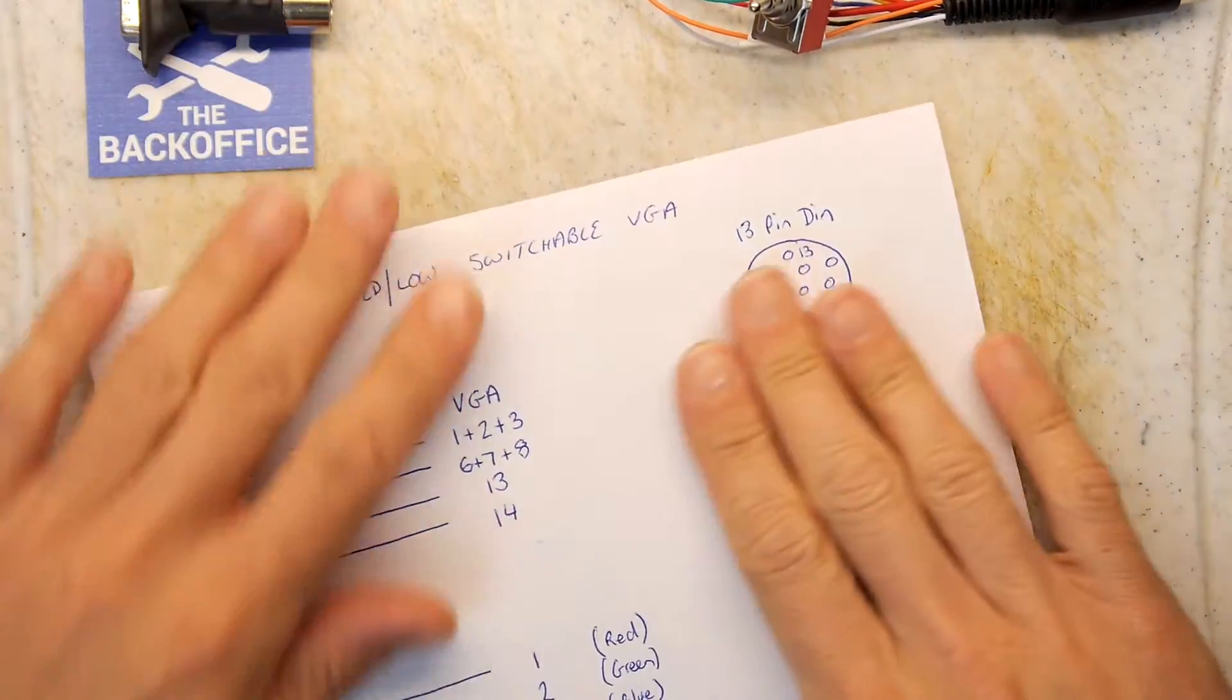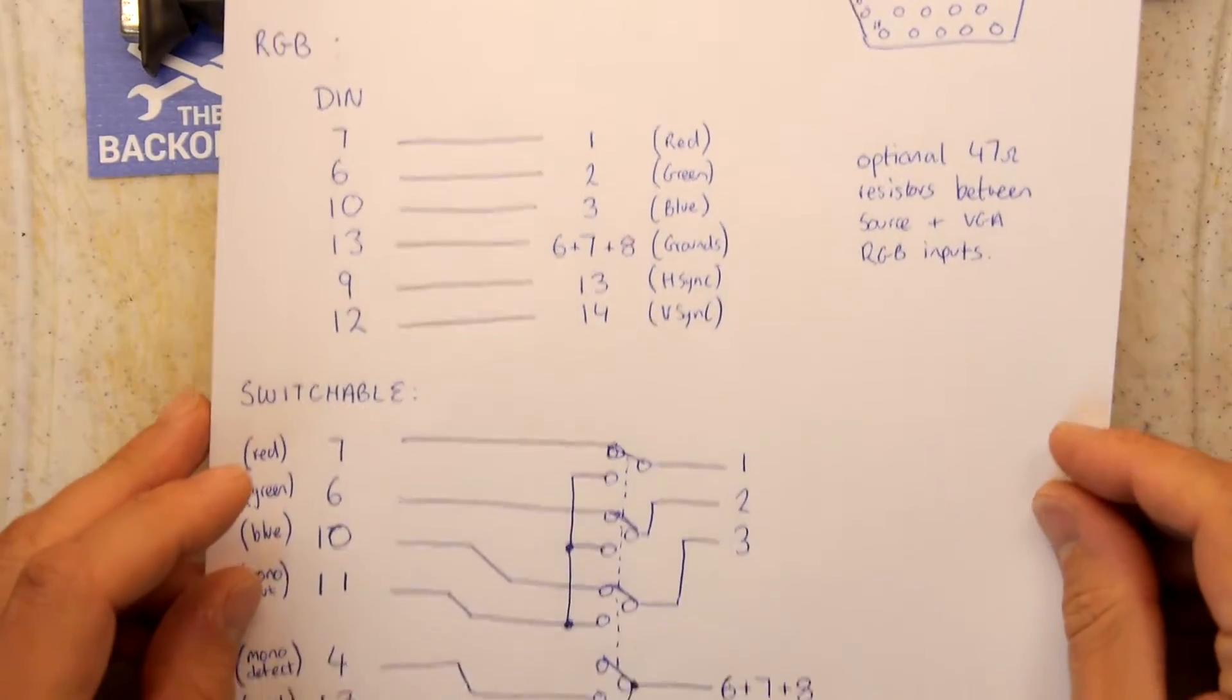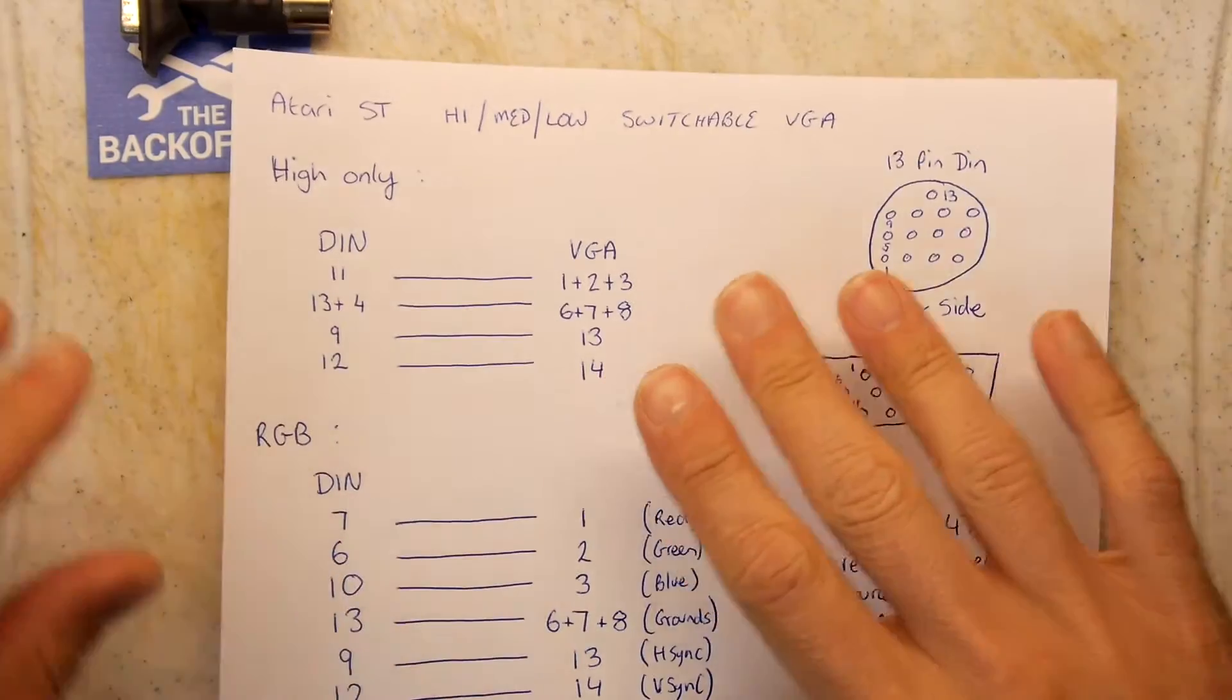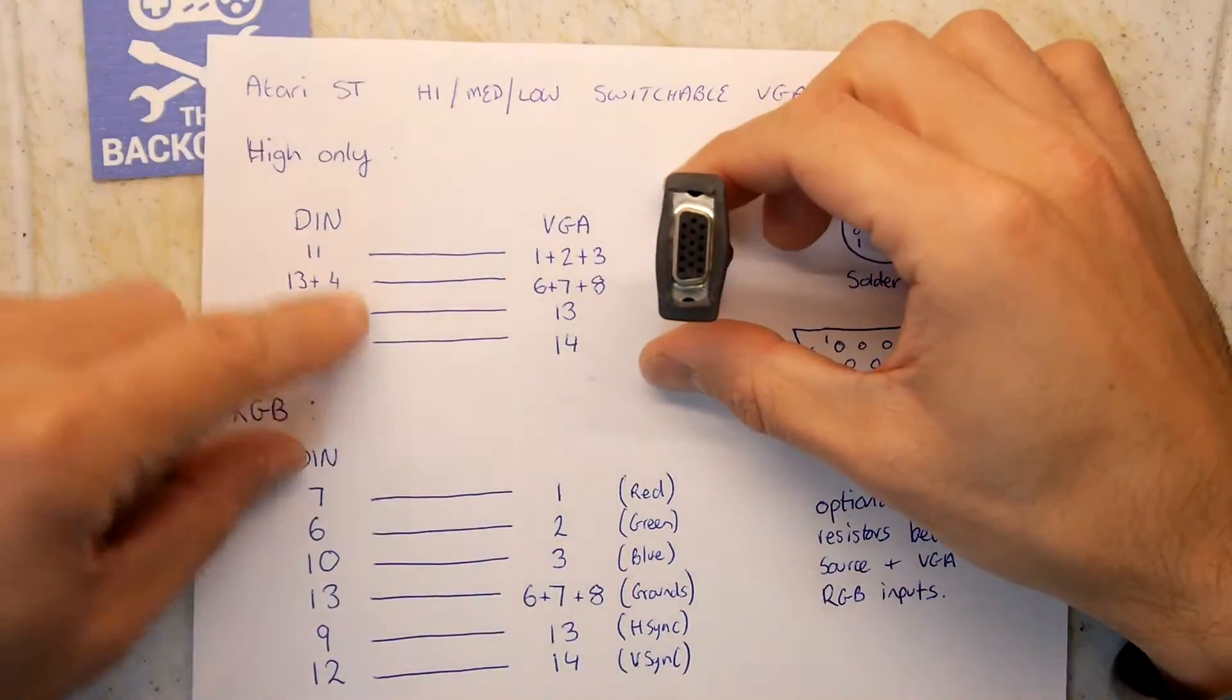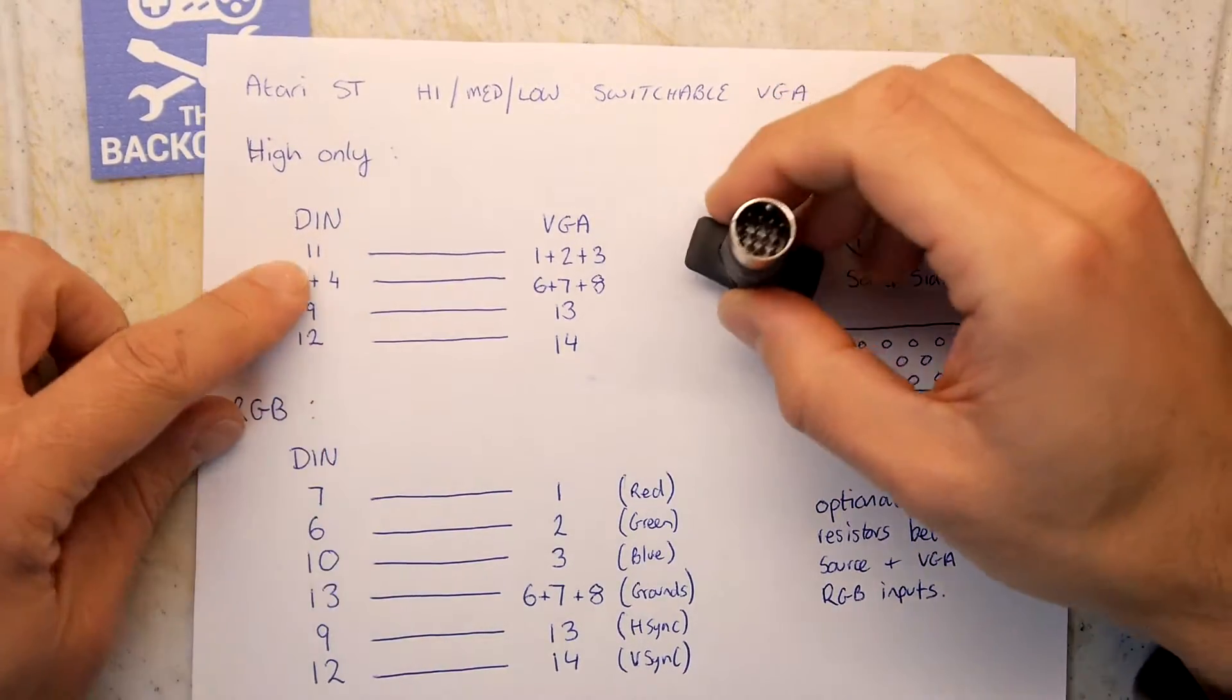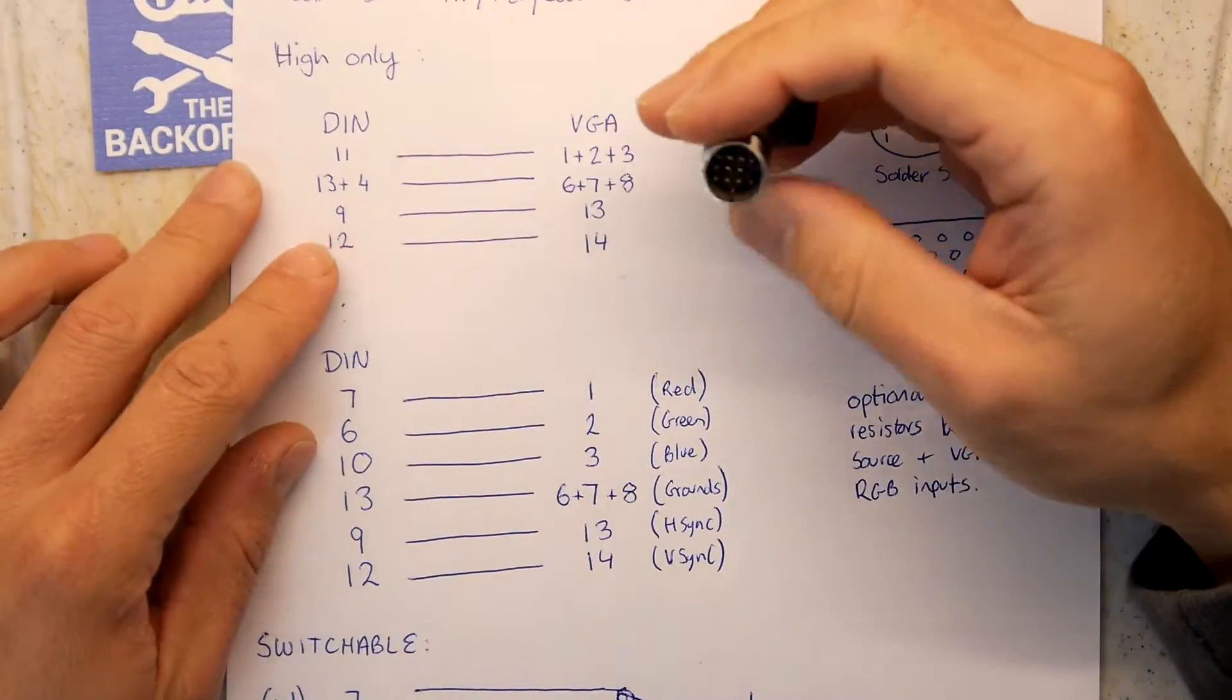So this is my little drawing and I'm going to scroll it up the screen. So don't worry, you'll be able to pause it at the appropriate times. But we're going to start at the top here. So this is the standard DIN to VGA configuration. And you can see these various pin numbers here. Further down, I've actually written what they are.